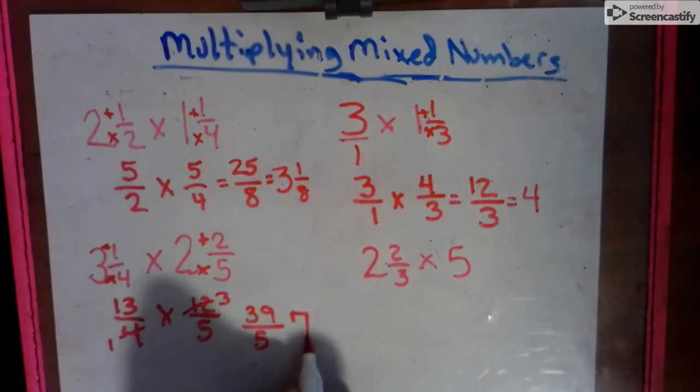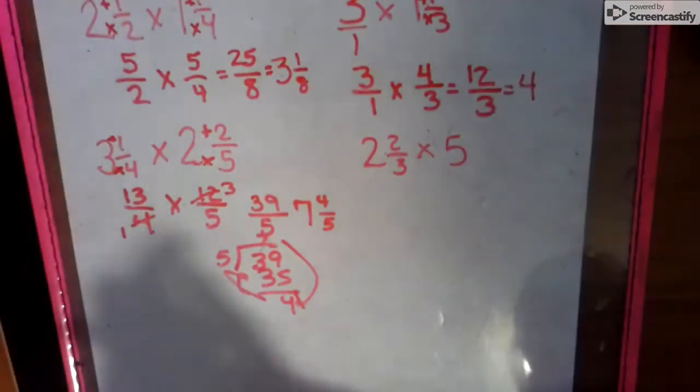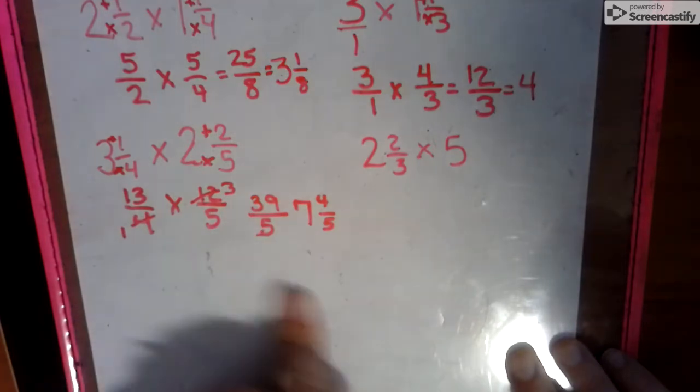5 goes into 39 7 times to make 35 with 4 fifths left over. Also known as 35 divided by 5 goes in 7 times, 7 and 4 fifths. Okay. I'm just going to get rid of that.